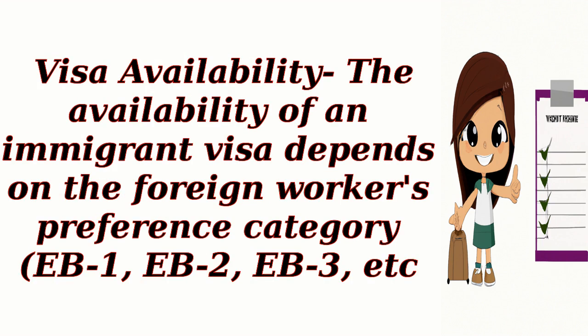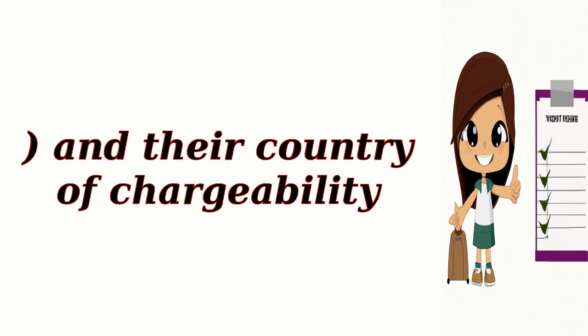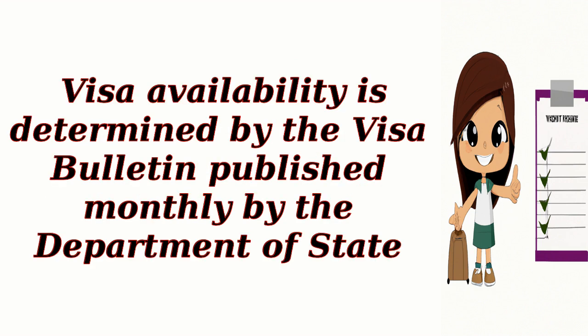Step four: Visa availability. The availability of an immigrant visa depends on the foreign worker's preference category — EB-1, EB-2, EB-3, etc. — and their country of chargeability. Visa availability is determined by the visa bulletin published monthly by the Department of State.